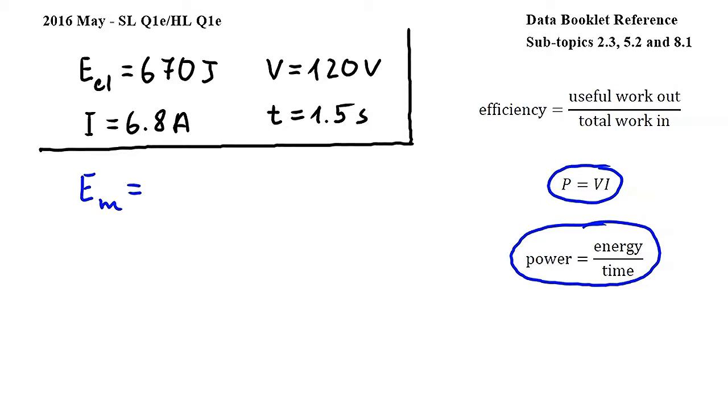Rearranging the second equation for energy, we get E, energy, is equal to P, power, multiplied by T, time. In the first equation we can see that P is equal to V times I, so then for Em we get V times I times T.